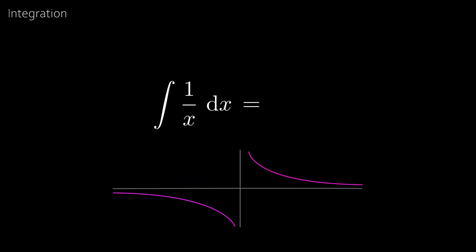And we recall that this integral is very special because the derivative of the natural logarithm is 1 over x. So the integral of 1 over x is ln x plus c.